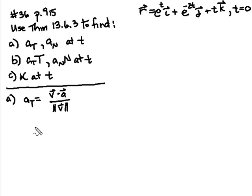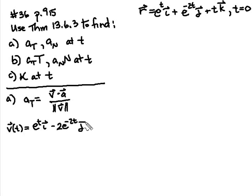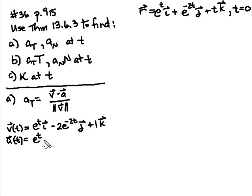V of T is the derivative of R of T, which is going to be e to the T i, minus 2e to the negative 2T j, plus 1k. The acceleration vector A of T is the derivative of the velocity vector, so that gives us e to the T i, plus 4e to the negative 2T j, plus 0k.